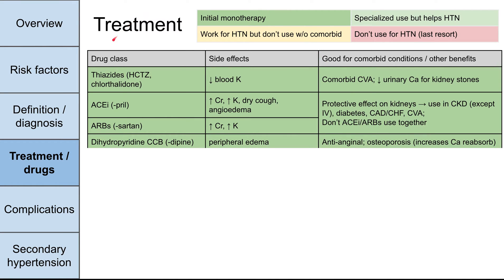Let's talk about the drugs for hypertension. Initial monotherapy requires one of four drug classes. First are the thiazide diuretics, including HCTZ and chlorthalidone. Side effects include hypokalemia — decreased blood potassium. These drugs are also good for comorbid conditions; thiazide diuretics may be prescribed for patients who also have strokes or CVAs. They also decrease urinary calcium, so they may be beneficial for somebody who has frequent kidney stones.